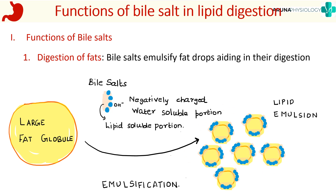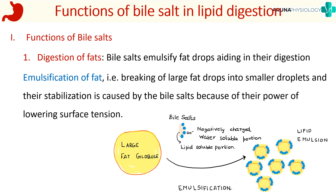Emulsification of fat is the breaking of large fat drops into smaller droplets, and their stabilization is caused by bile salts because of their power of lowering the surface tension. The liposoluble part of the bile salts faces the inner part of the droplet, while the water-soluble part faces the outer part, stabilizing these small fat droplets.